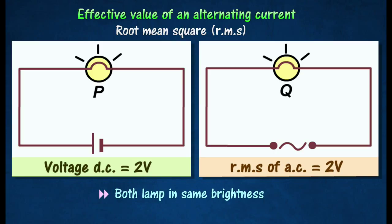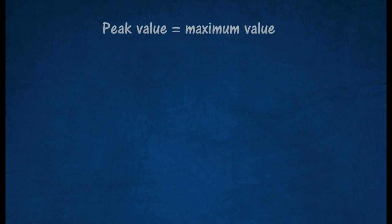The root mean square value of alternating current will have the same effect on the bulb as a comparable value of direct current will have on the same bulb.